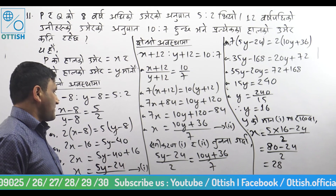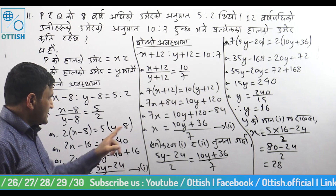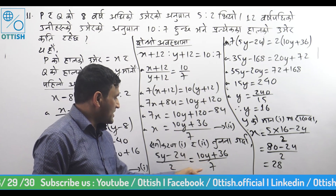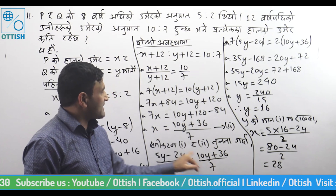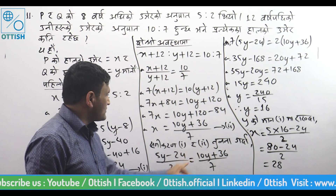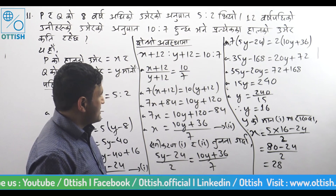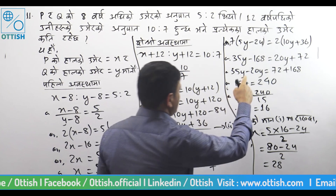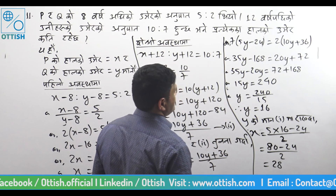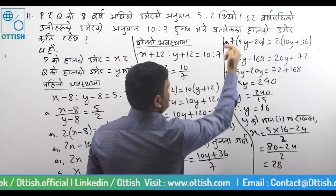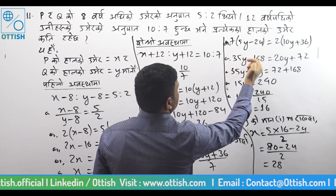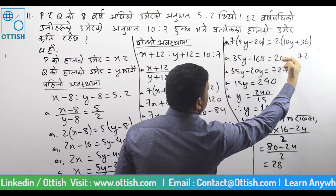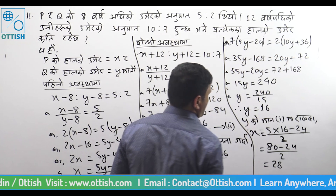5Y minus 24 upon 2 is equal to 10Y plus 36 upon 7. Cross multiply: 7 times 5Y minus 24, and 2 times 10Y plus 36, giving 35Y minus 168 equal to 20Y plus 72.